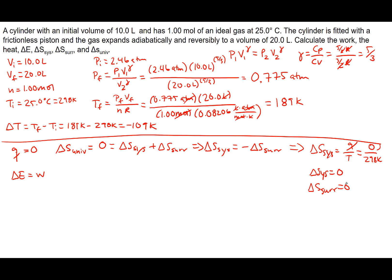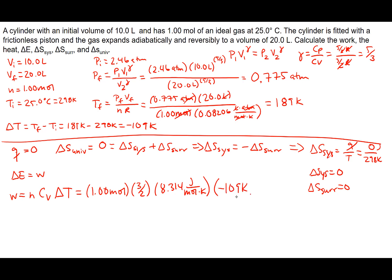The only math left is calculating the work. For an adiabatic process, work = nCvΔT. Plugging in: 1.00 moles times (3/2 × 8.314 J/(mol·K)) times (−109 K). This gives work = −1,360 joules. Since Q = 0, ΔE = W = −1,360 joules as well. That's the complete process for calculating all the values for an adiabatic reversible expansion of an ideal gas.